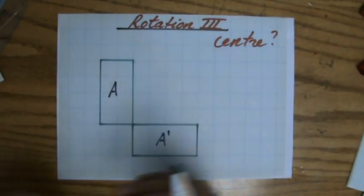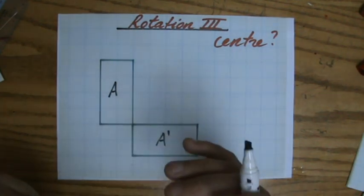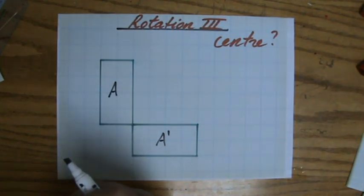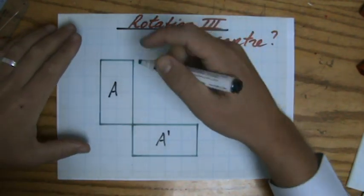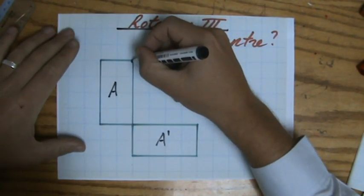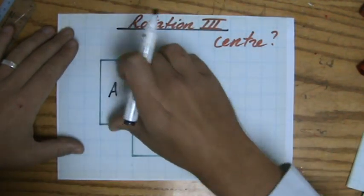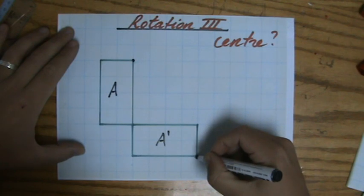First of all, I have to find two pairs of corresponding points. Two pairs. Let's do the first pair. So this point, for instance, corresponds with which point here? Well, if I rotate it, it's going to correspond with that point.